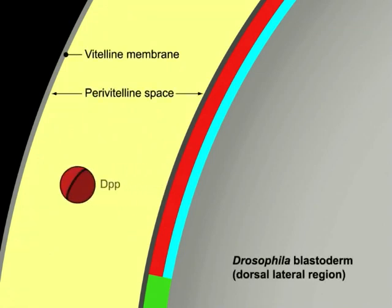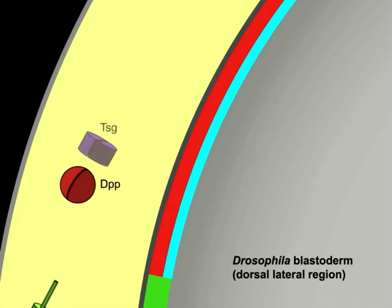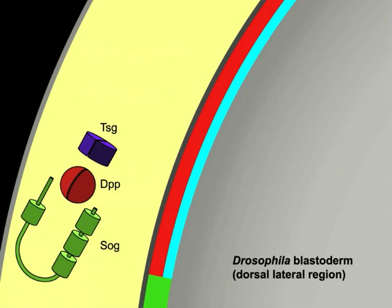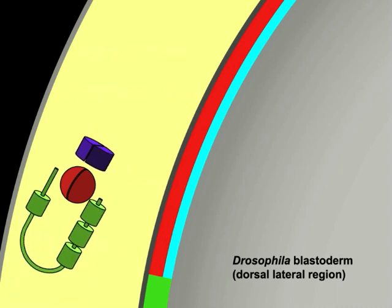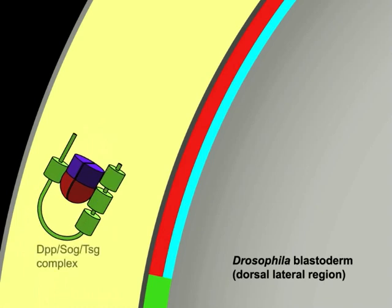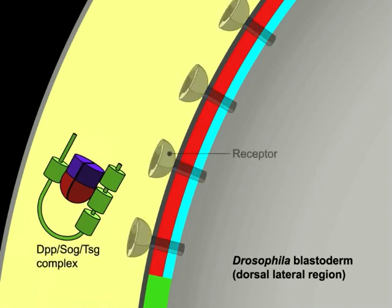SOG makes a complex with DPP that inhibits the DPP signal from spreading into the lateral regions. At the same time, this complex, which also contains twisted gastrulation, or TSG, protects DPP from degradation and receptor-mediated internalization, and also allows it to diffuse.